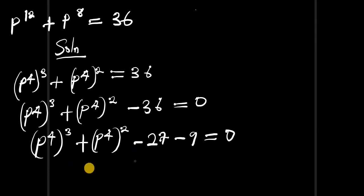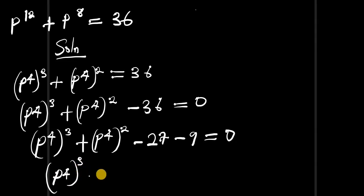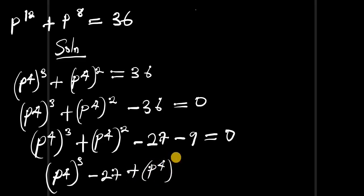Let's rearrange the whole equation. We are going to have (p to the power of 4) to the power of 3 minus 27, plus (p to the power of 4) to the power of 2 minus 9, equals zero. Let's continue in the next slide.